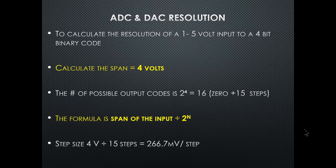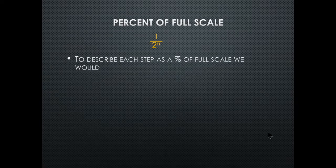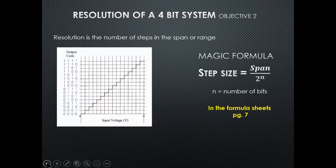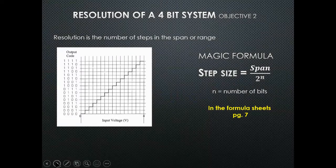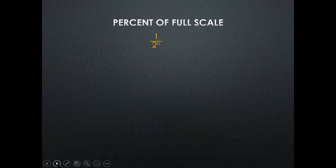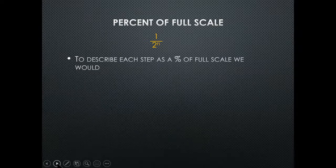Looking back at the chart, you can see all 15 different steps. These are truncated — it's on or off, one and zero. The steps show at what voltage the signal changes to the next binary value. For percentage of full scale, the formula is 1÷2ⁿ × 100.